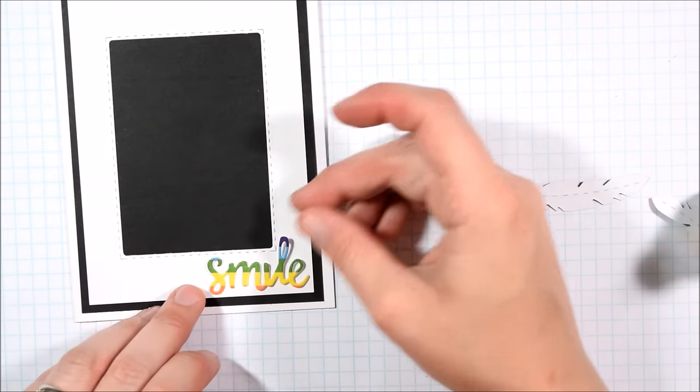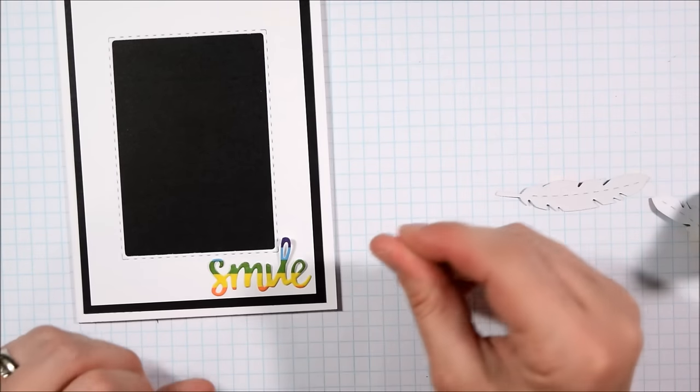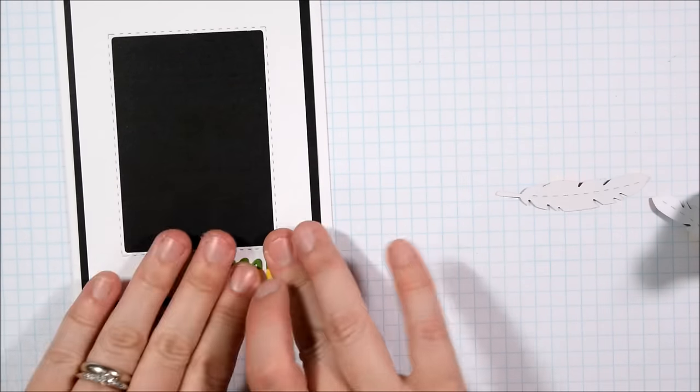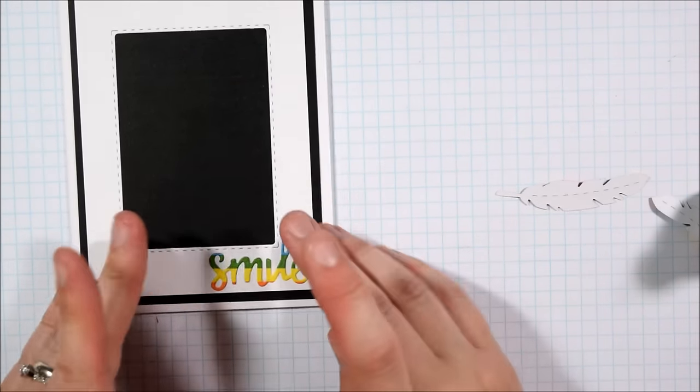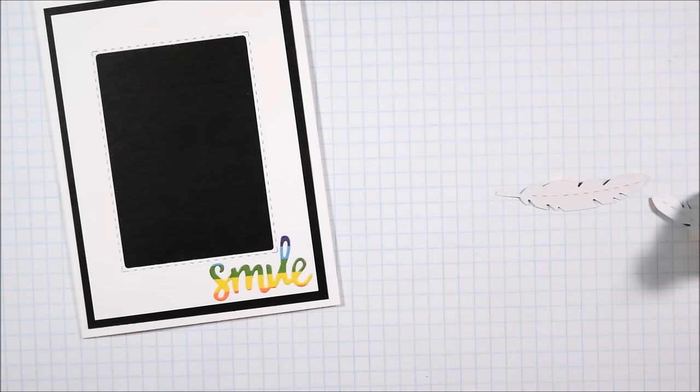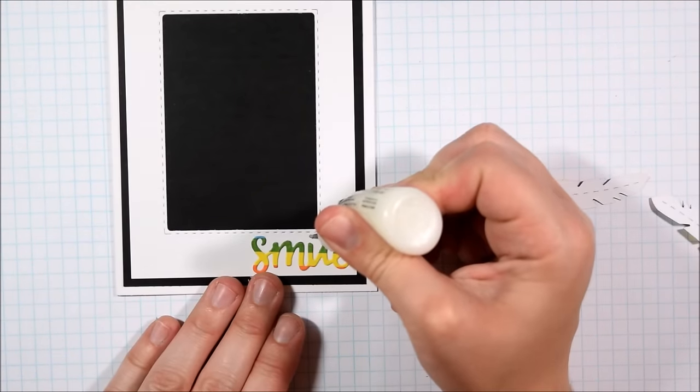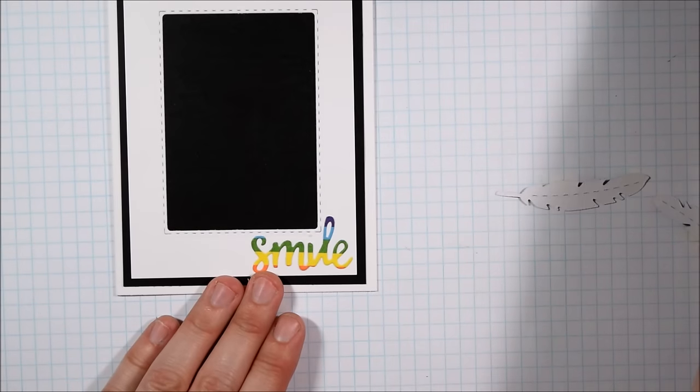You can use something like Stick It adhesive which will create an adhesive back to your dies, or like two-way tape on the back of your dies before you die cut so that way you don't have to mess around with all of the little die cuts and gluing them on.